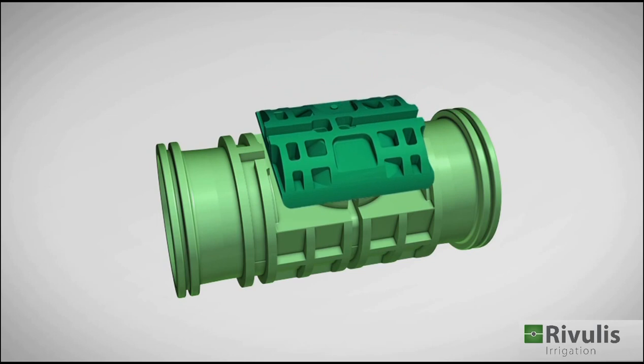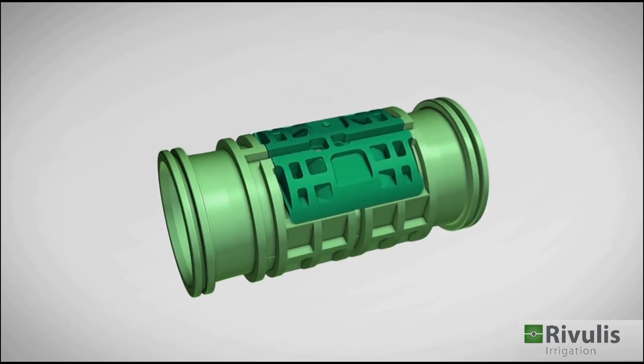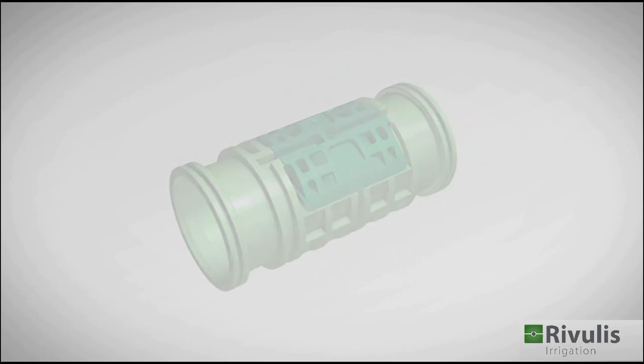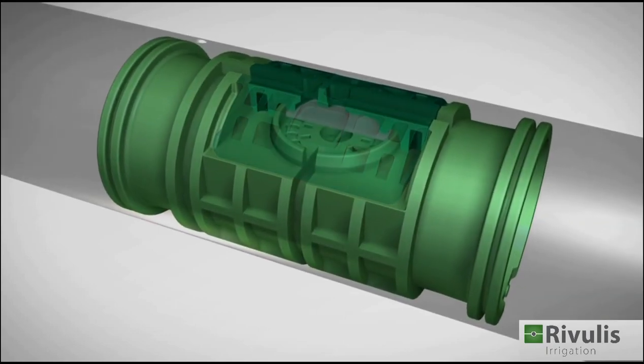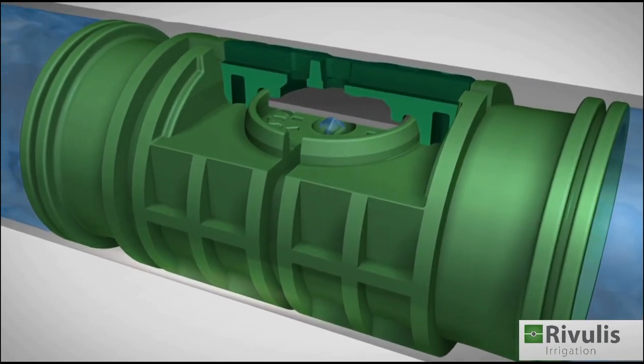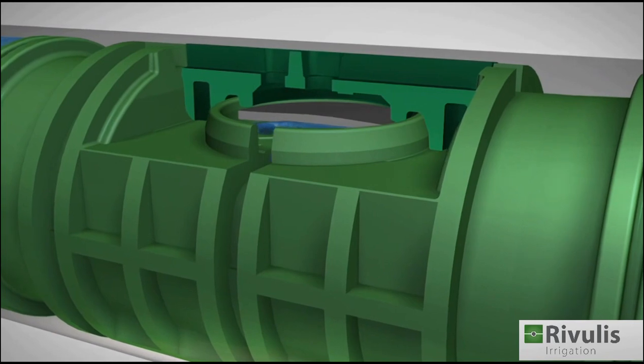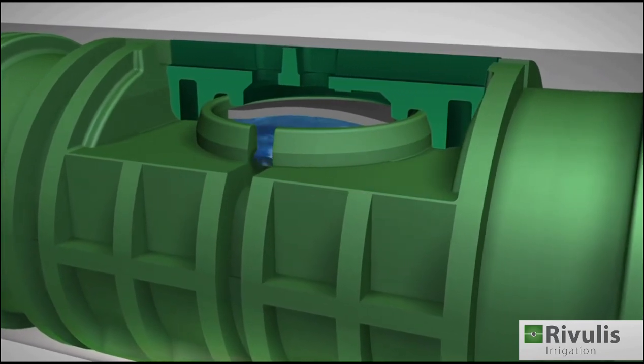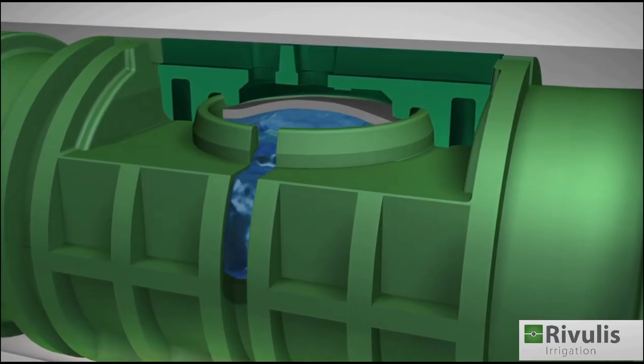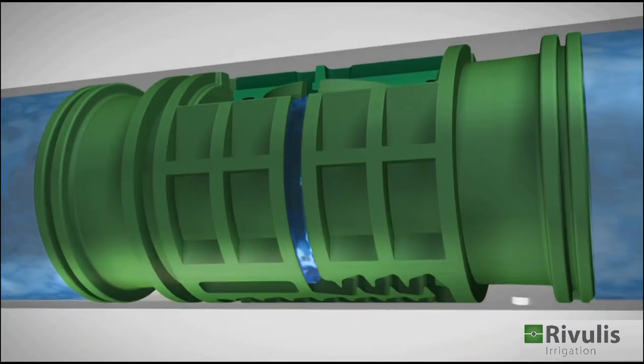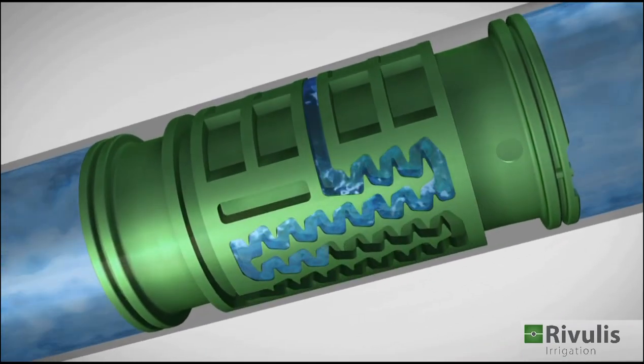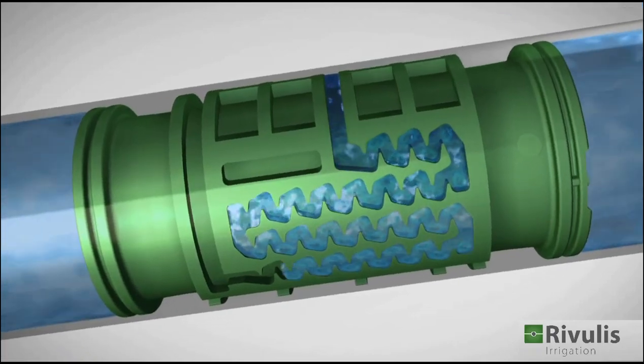The water from the pipe enters the dripper through the inlet filter and exerts pressure on the bottom of the diaphragm. The large cross-sectional labyrinth provides excellent protection against clogging.